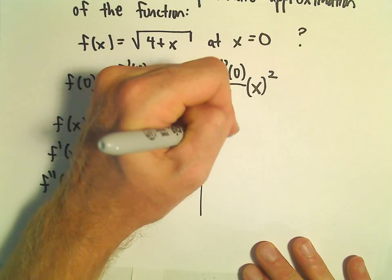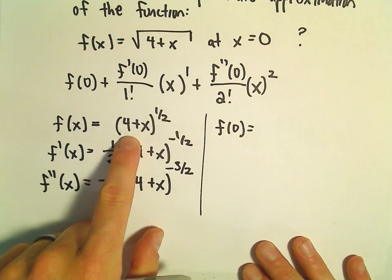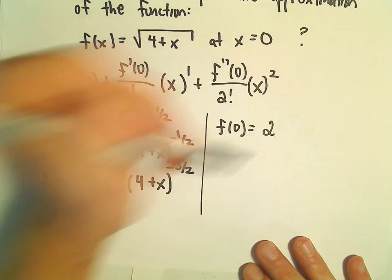So again, now I'm just going to plug 0 in. So f of 0, that's going to be 4 to the 1 half, or the square root of 4, which is going to give us 2.